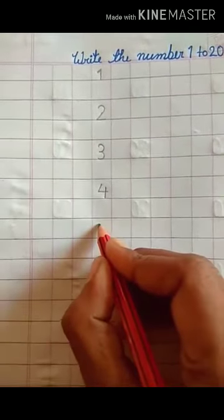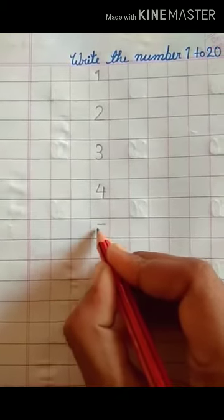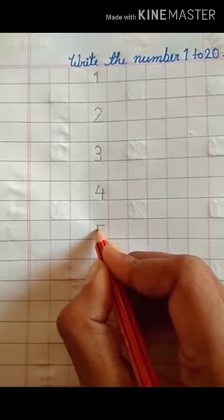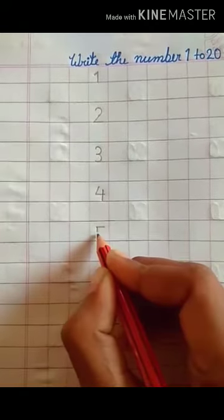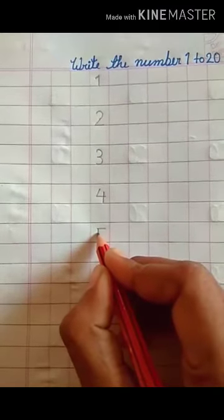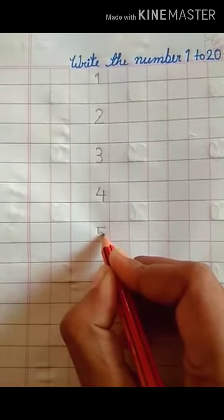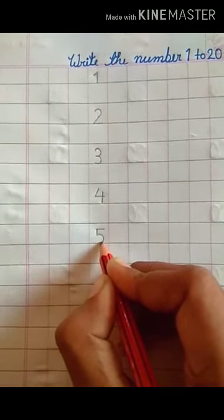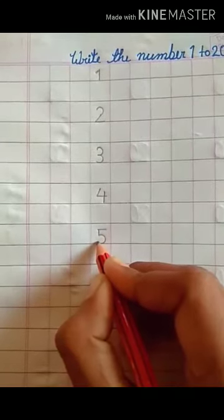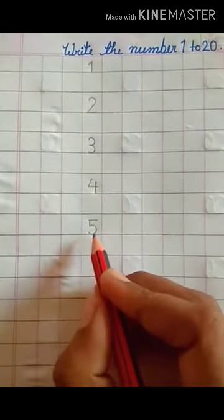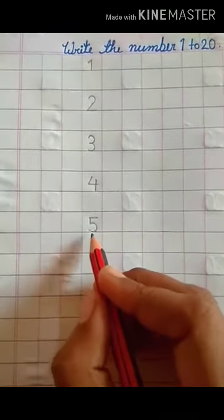Draw sleeping line, then draw standing line, then draw right curve. This is number 5.